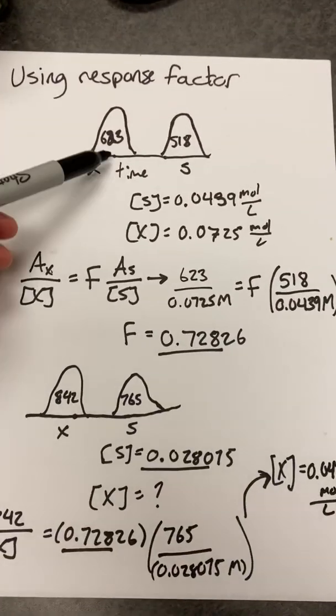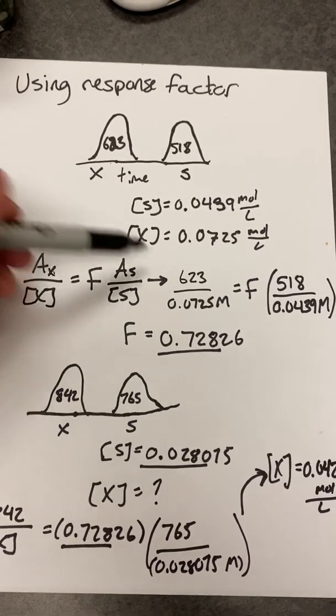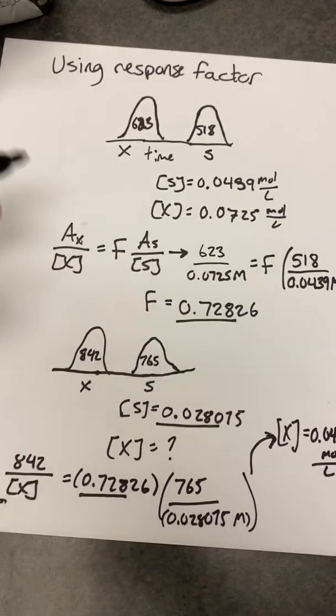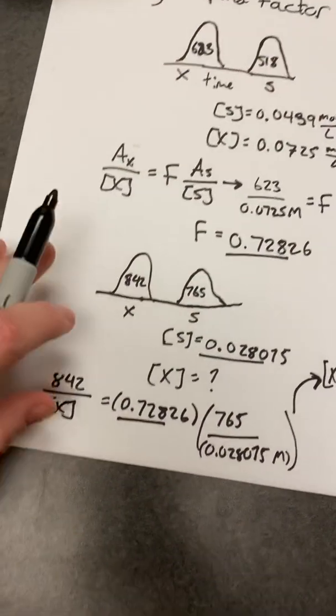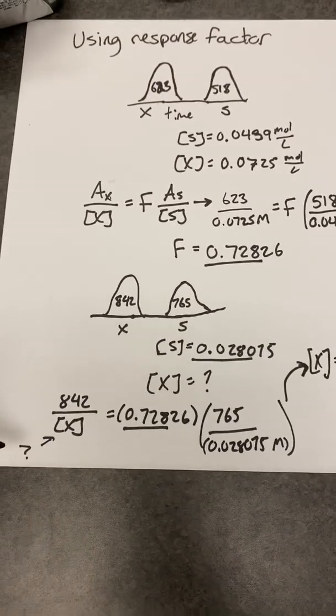So step number one, we had to know the analyte in the standard. We had to actually know their concentration in order to determine the relationship between them. And then we were able to utilize that information to figure out an unknown amount of some analyte. And that is how we use the response factor.